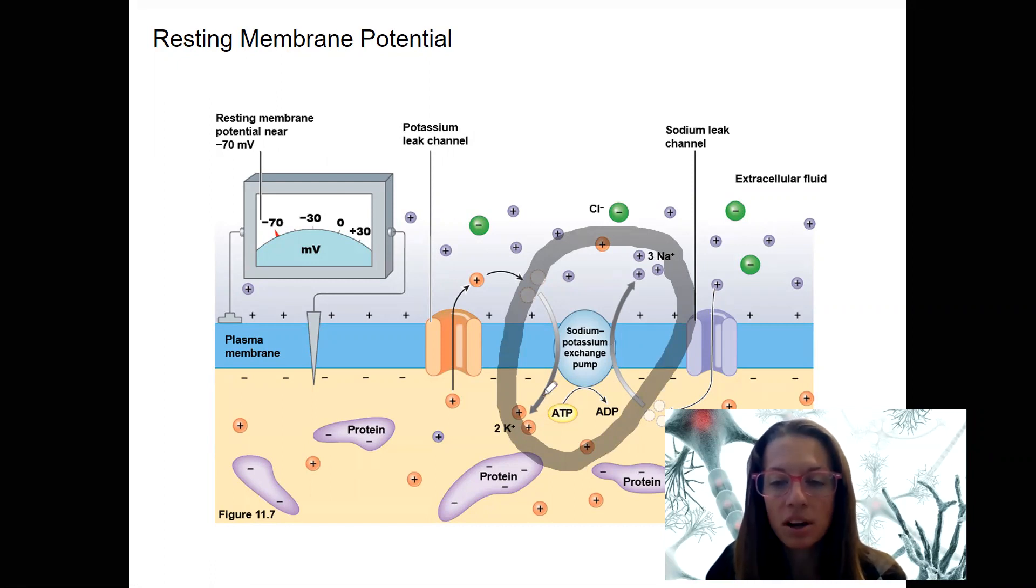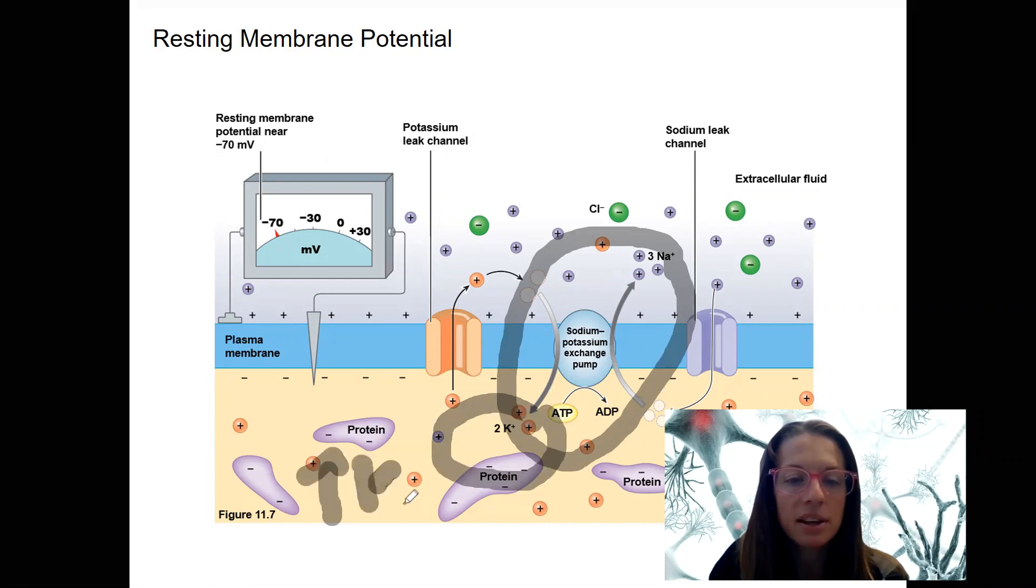Once you establish that concentration gradient, you've got high potassium inside the cell. It's just that high potassium outside the cell. So if you throw in a bunch of potassium leak channels, where's potassium going to go? It's going to flow out.